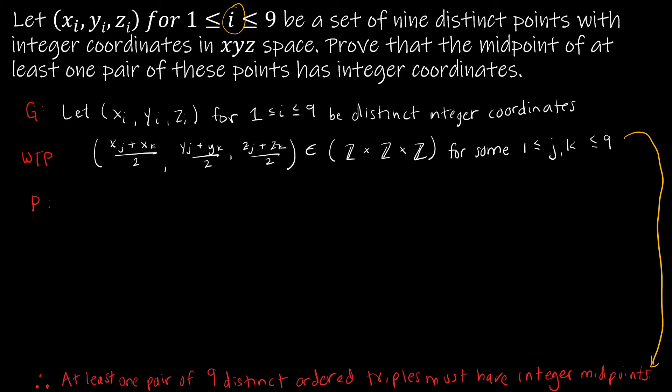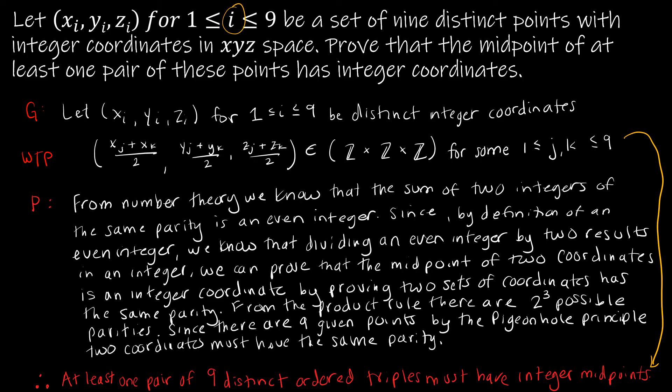Now for the proof, you cannot assume that whoever is reading your proof knows what we just talked about on the last slide. So as I'm starting my proof, and the reason that I'm just showing you the proof as opposed to writing it out as we go is because I will make a mistake 100 times and take 100 takes of this video, and I don't want to do that. So I went ahead and wrote it out. But I'm just kind of saying what we did on the last slide. From number theory, we know that the sum of two integers of the same parity is an even integer. Since by definition of an even integer, we know that dividing an even integer by two results in an integer, we can prove the midpoint of two coordinates is an integer coordinate by proving two sets of coordinates have the same parity.